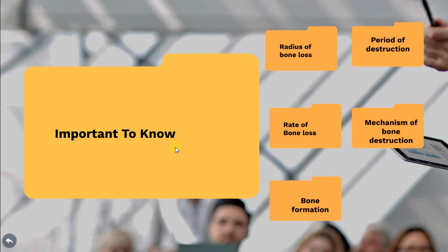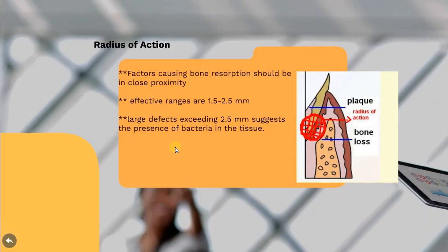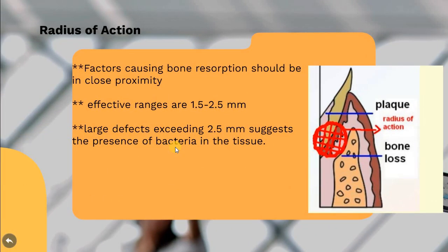We talked about five important features of bone loss and bone formation. One of them is the radius of action. Scientists suggest that locally produced bone resorption factors may need to be present in the proximity of the bone surface to exert their action — specifically, the plaque should be within 1.5 to 2.5 millimeters from the bone. Otherwise, there will be no effect.